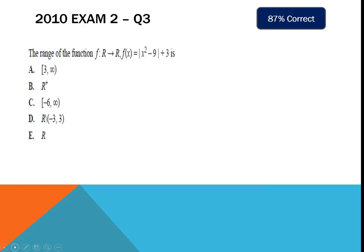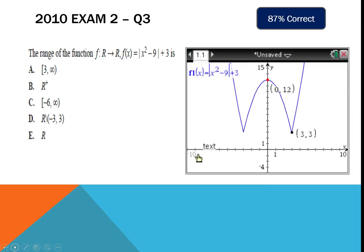Finding the range of a function is not a difficult question, but students sometimes only look at endpoints and forget to account for the shape of the graph. Use your calculator — sketch it and look for the lowest point up to the maximum. For this absolute value graph, the range is from 3 inclusive — that cusp point — up to infinity, so A is the correct answer.